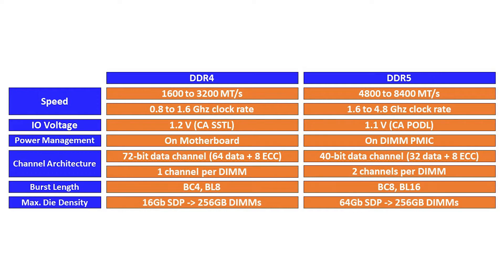Speeds for DDR4 include 1600 to 3200 megatransfers per second and a 0.8 to 1.6 gigahertz clock rate. Compare that to 4800 to 8400 megatransfers per second and the 1.6 to 4.8 gigahertz clock rate for DDR5. The IO voltage for DDR4 is 1.2 volts, where the IO voltage for DDR5 is 1.1 volts. Power management for DDR5 is now on DIMM, where power management for DDR4 was found on the motherboard.